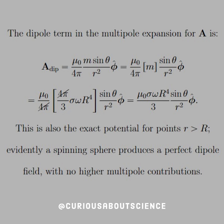But, if you remember from the example in the book, this is also the exact potential for points outside of the sphere. Evidently, a spinning sphere produces a perfect dipole field with no higher multipole contributions. And again, this should emphasize how easy it is to find the potential from these multipole approximations. And quite frankly, that was a lot easier than dealing with that nasty integral from the definition of the potential.